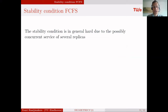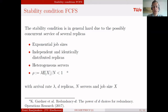Now we focus more on the stability condition, with the first-come first-served service discipline — the discipline you also saw in the visualisation. The stability condition is in general hard to determine due to the possibly concurrent service of several replicas. However, there are two special cases for which the stability condition is known. The first case is exponential job size and IID replicas with heterogeneous servers. For homogeneous servers the stability condition is that rho — defined as the arrival rate times the expected job size divided by the number of servers — should be less than one.